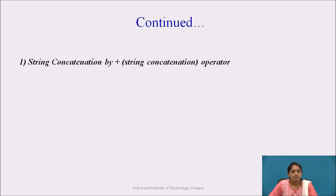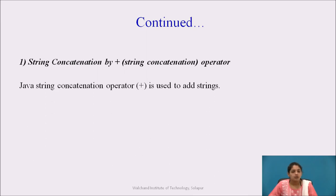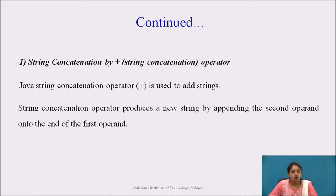String concatenation using the plus operator: the plus operator is used to add strings, and it produces a new string by appending the second operand onto the end of the first. For example, if you have strings s1 and s2, then s3 = s1 + s2 means s2 is joined at the end of s1.